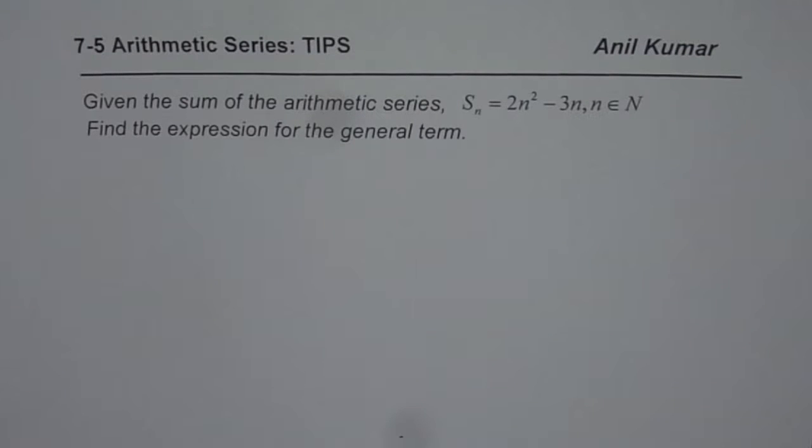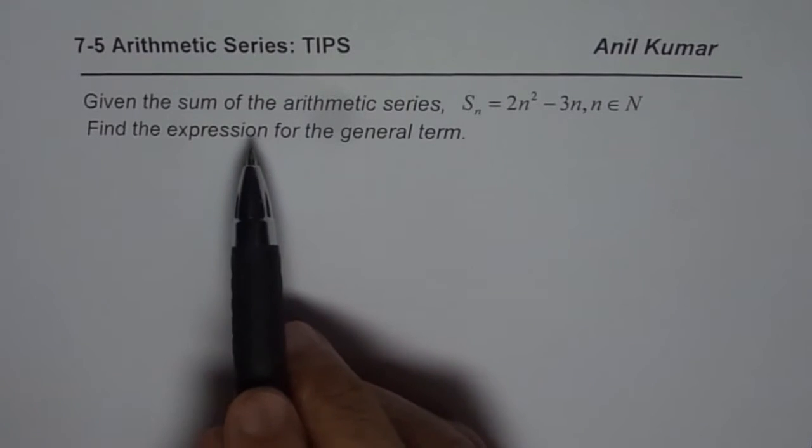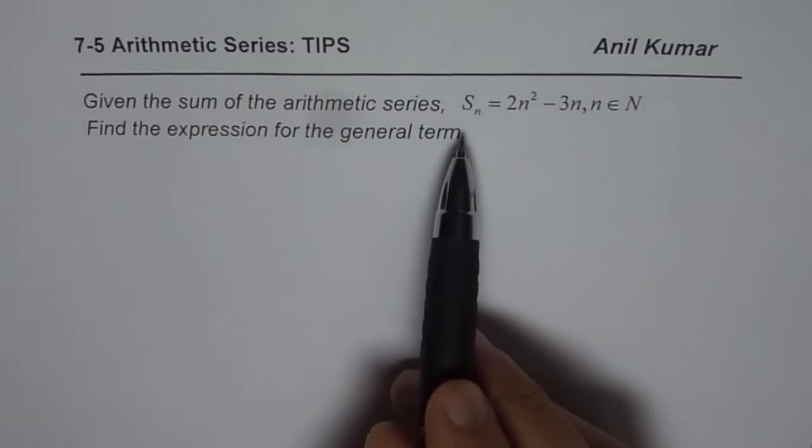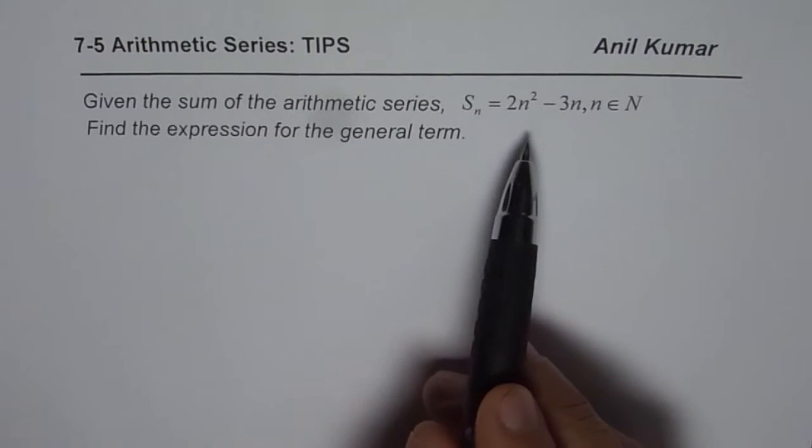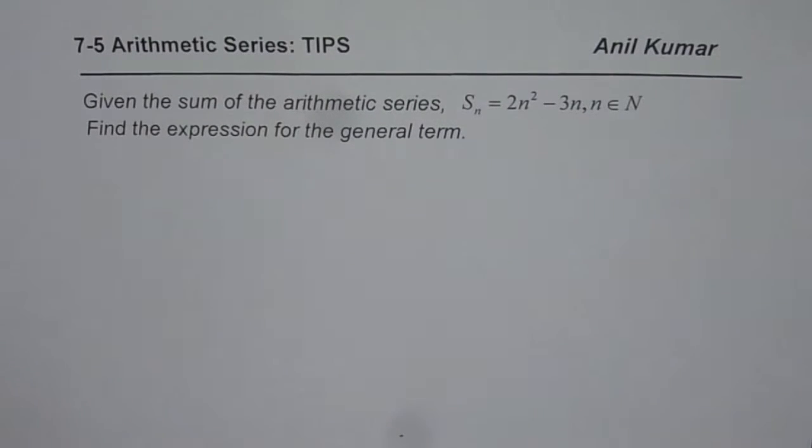I am Anil Kumar and now let us look into a thinking question on arithmetic series. Given the sum of the arithmetic series as S_n equals 2n² minus 3n where n belongs to the set of natural numbers, find the expression for the general term.